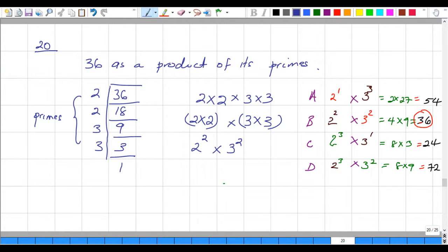Number 20, it says, what is 36 written as a product of its primes in exponential form?